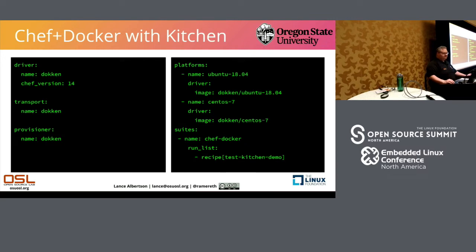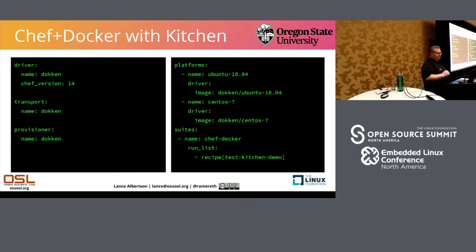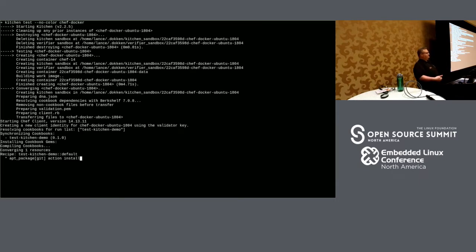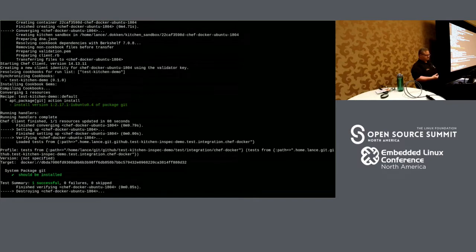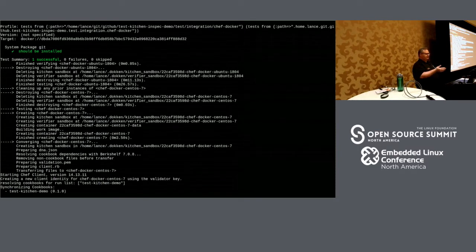Another nice driver included with Kitchen is one integrated with Docker, called 'Dokken'. The original kitchen-docker didn't work very well, but this one is very integrated with Chef. The nice thing is that once you have all the images downloaded, it's really fast. The problem is if you're running recipes or code that doesn't like being inside of a container, this doesn't work very well. There are upstream images already pre-created, and here I'm running both suites — Ubuntu first and then CentOS. You don't have to run them all serially — you can run them concurrently, though you want to be careful about how many concurrent ones you run depending on your machine.